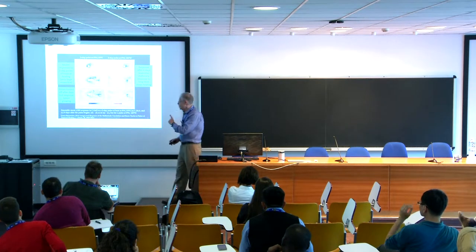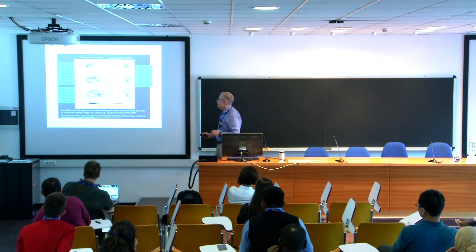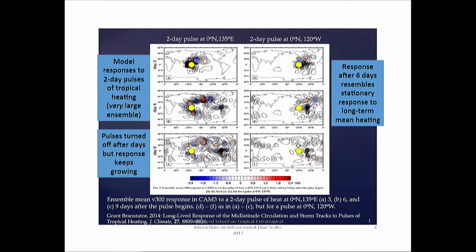So the first slide — I'm going to show this slide tomorrow again in a different context. This actually comes from a recent paper by Grant Branstetter in 2014. The question was: what is the response of the extratropics to tropical heating anomalies that are short-lived, versus what is the response to the same tropical heating anomalies if they were to just stay there permanently? What he did was take an atmospheric model, a dry model with no moisture so you can just specify heating. He put a heating in — for example, in this set of experiments here on the left column — where that yellow circle is, a deep heating representing anomalous convection there for two days only. Put it on, leave it there for two days, and turn it off.